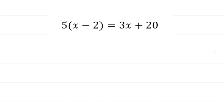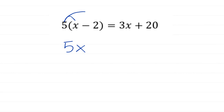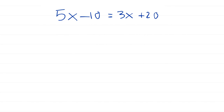On the left side, I see a set of parentheses that we can use the distributive property on. So take a look at the left side and simplify. If you work it out, that gives us 5x minus 10 equals 3x plus 20.